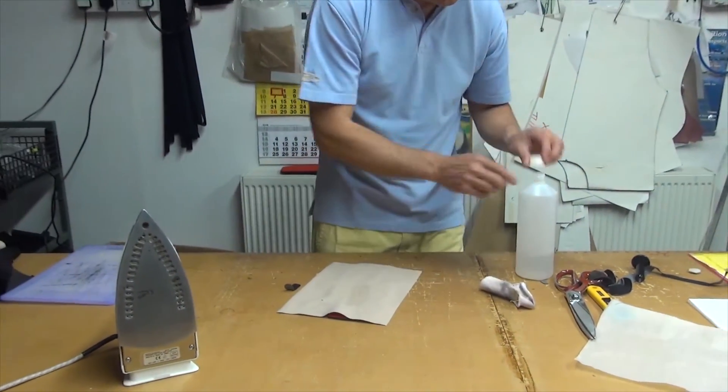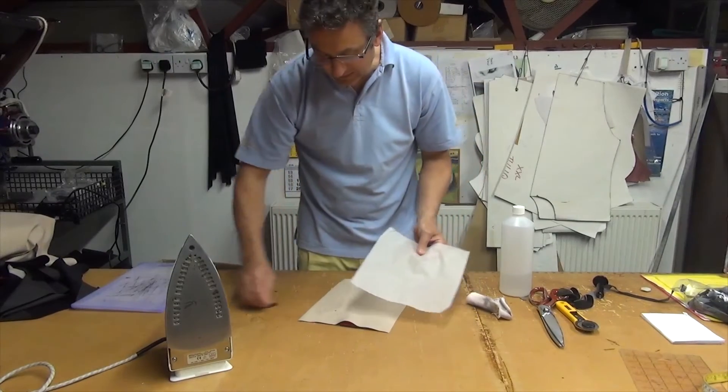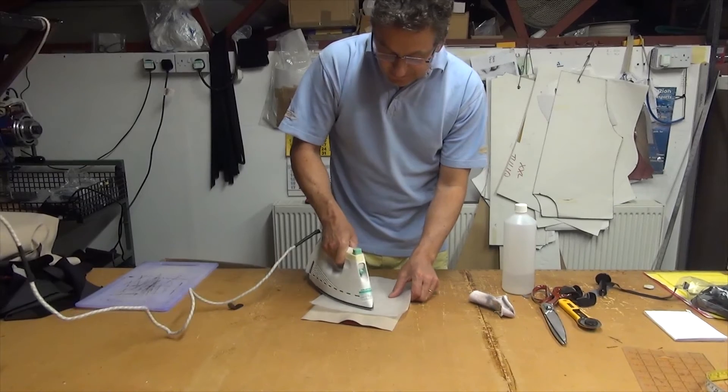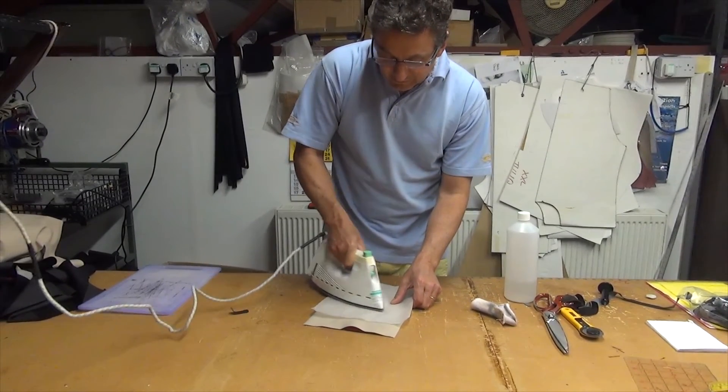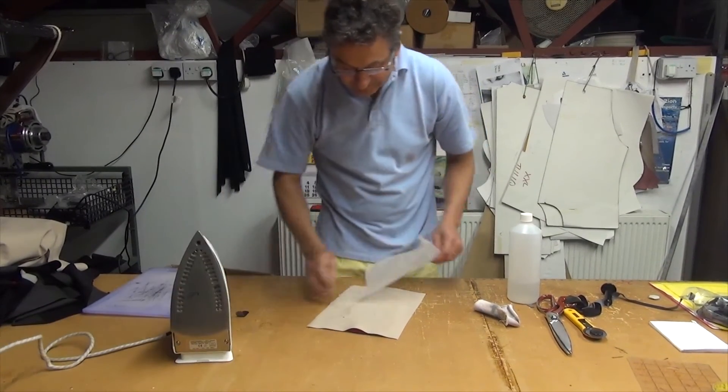And then you can just use the greaseproof paper and the iron set at the domestic temperature just to pre-warm the fabric. This kind of cleans the whole surface up a little bit as well. Maybe do this a couple of times and it cleans the surface up. Now that's dry and clean.